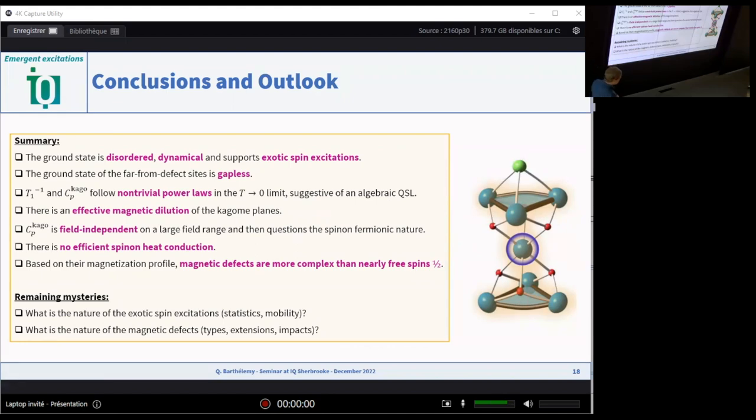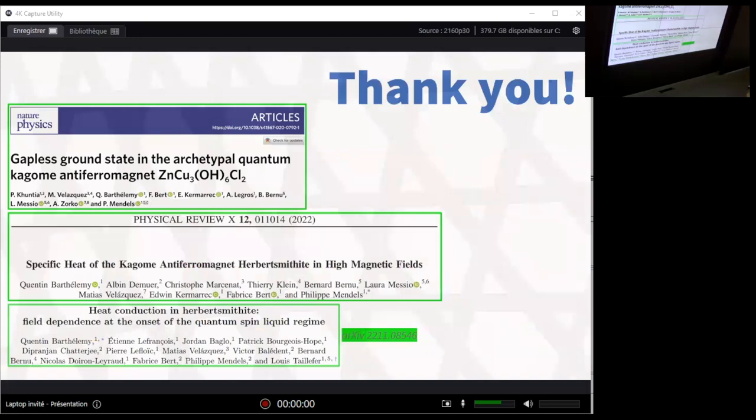So at the end, the nature of the ground state of Herbertsmithite still remains enigmatic. We don't understand really the nature of the exotic spin excitations. We know that there is quite a large amount of spin excitations at low temperatures, intrinsic to the Kagome planes, but we don't know really if they are mobile or not, if they have fermionic statistics. Our analysis for the magnetic defects magnetization gives a new impulse to the theoretical work now to try to model these defects. So with that, I want to thank you for your attention. And I am done.